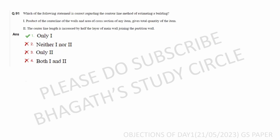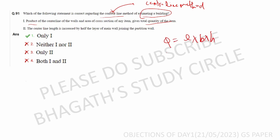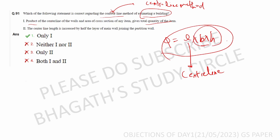Next question: which of the following statements is correct regarding the contour line method — actually the center line method — of estimating a building? First statement: the product of the center line of the walls and the area of the cross section of any item gives the quantity, i.e., L into B into H. Center line length into width into depth.